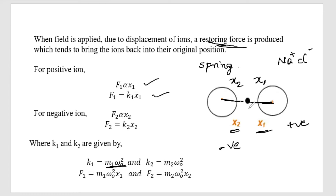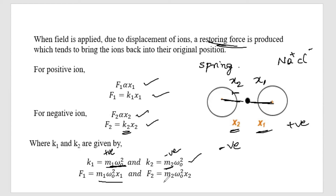Similarly, for the negative ion, X2 is the distance moved, so F2 is proportional to X2, giving F2 equals K2·X2, where K2 equals M2·omega-naught squared. Here M1 is the mass of the positive ion and M2 is the mass of the negative ion. Therefore, F1 equals M1·omega-naught²·X1 and F2 equals M2·omega-naught²·X2. These are the restoring forces acting on each ion.